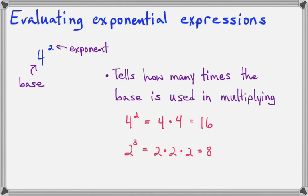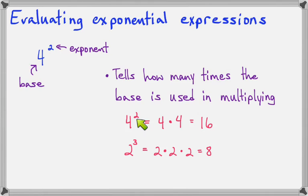I need to give you a little heads up about some vocabulary that we use. We pronounce this '4 to the second power' or '2 to the third power,' but for 2 and 3 we have a shortened name. Instead of saying '2 to the second power,' we say 'squared,' so this could be read as 4 squared. And instead of saying '2 to the third power,' sometimes we'll say '2 cubed.' Like a square is in two dimensions and a cube is in three dimensions — that's where those shortcuts come from. So this can be read as 4 squared and 2 cubed. Either way is acceptable.